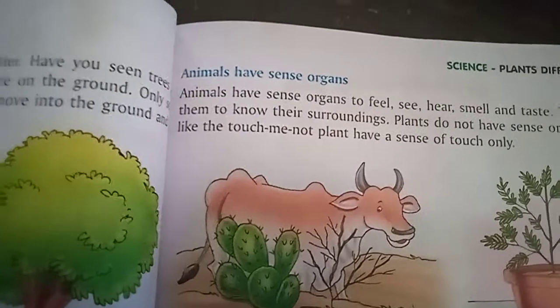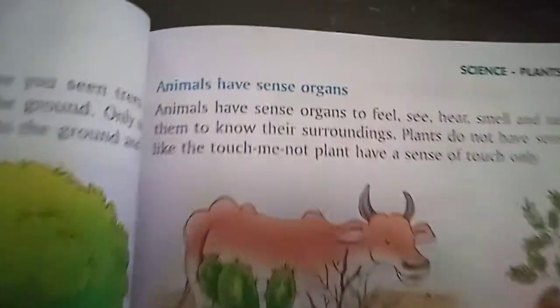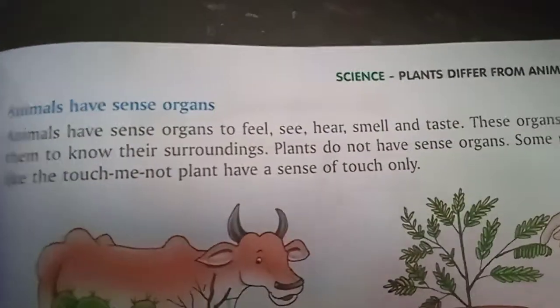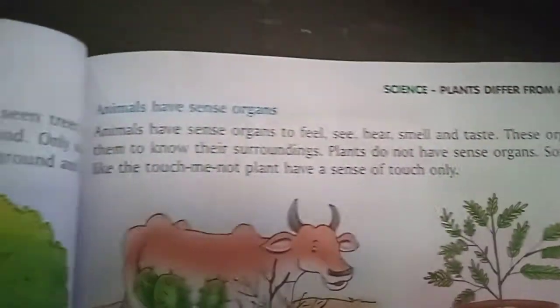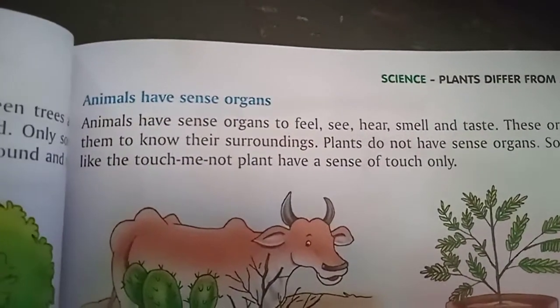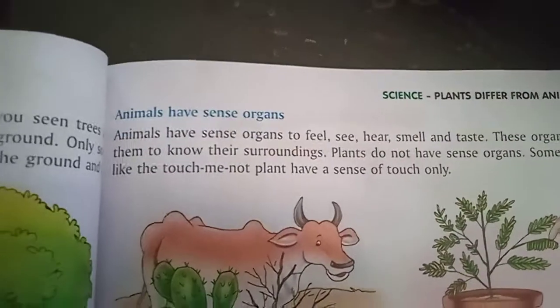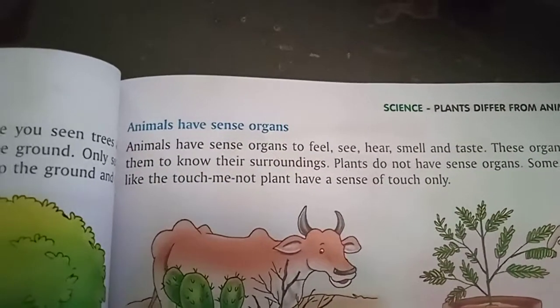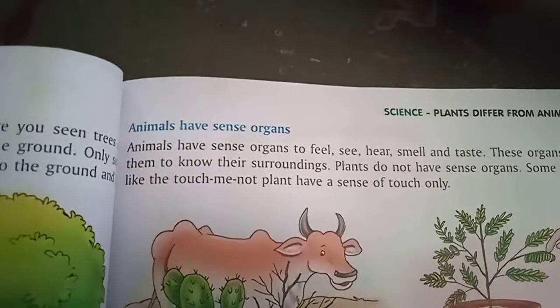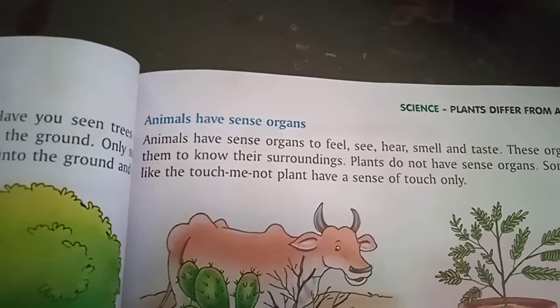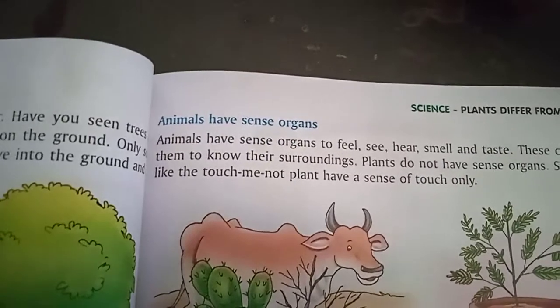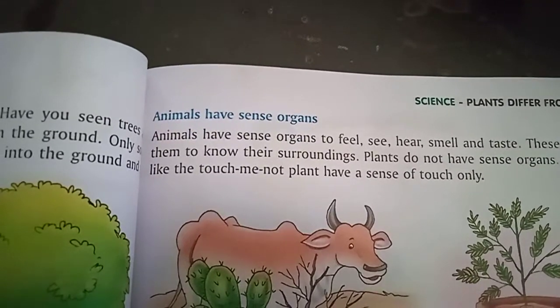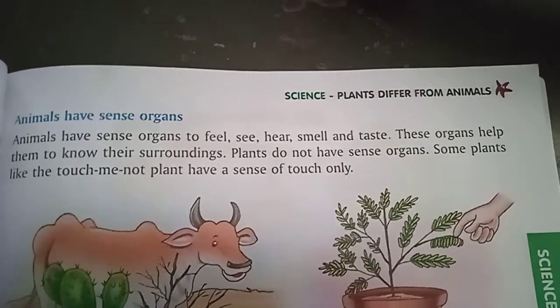The next point is sense organs. Animals have sense organs to feel, see, hear, smell, and taste. These organs help them to know their surroundings. Plants do not have sense organs.